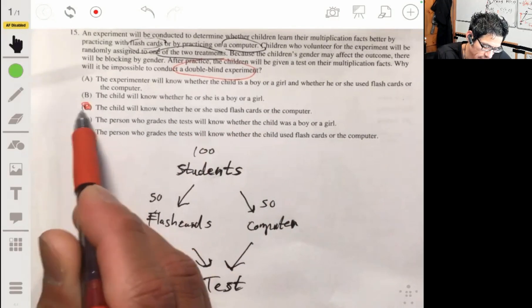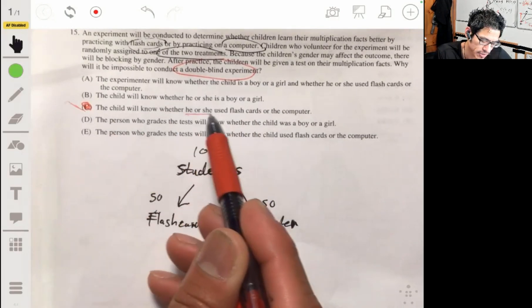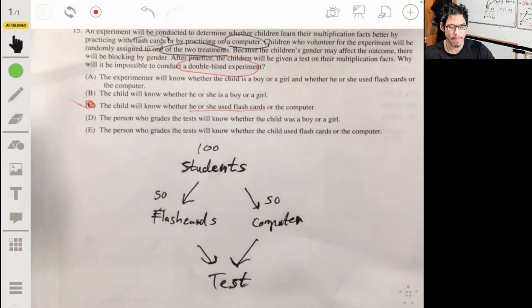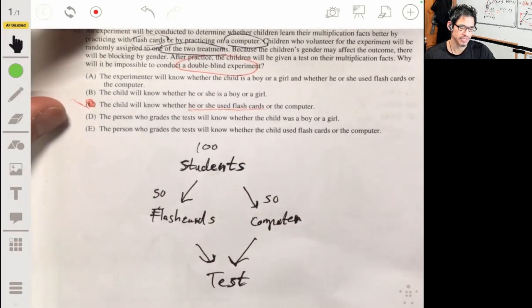It's not going to be possible in a sense. So the answer is going to be C. They're going to know whether he or she used flashcards or the computer. It doesn't have to do with gender because they're both going to be mixed up, boys and girls in each group.